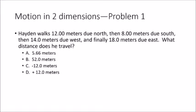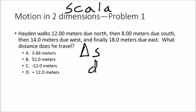It says Hayden walks 12 meters due north, then 8 meters due south, then 14 meters due west, and finally 18 meters due east. What distance does he travel? Remember that we might notate distance as delta S, or just D. The important thing to remember about distance is that distance is a scalar quantity — the magnitude matters, but the direction does not.